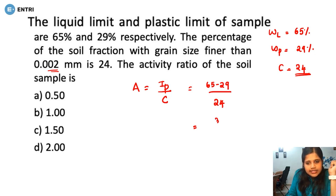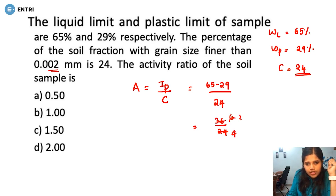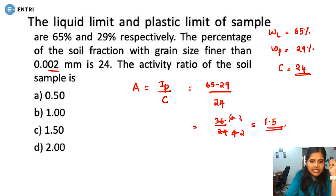We get 36 by 24. Simplifying, 6 by 4, that is 3 by 2. So the answer will be 1.5. The activity ratio answer is 1.5.